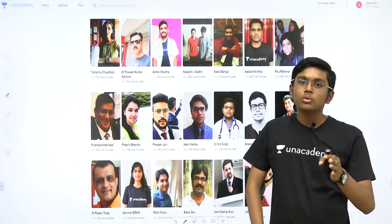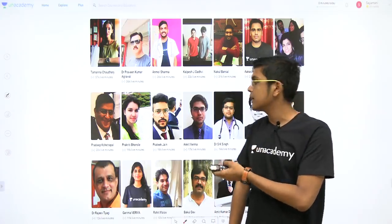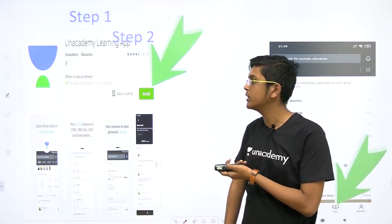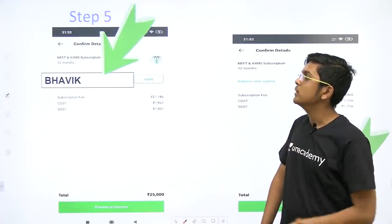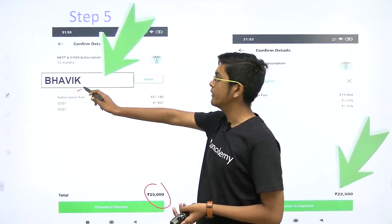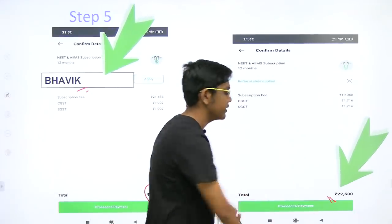I would try to take classes there but many much more experienced faculty are already taking classes. So you can register through the Android app or the website. The medical one year subscription costs 25,000. You can use the code Bhavik and get a 10% discount and you can get it for 22,500.